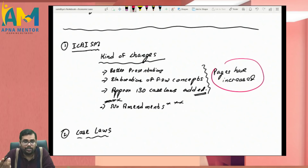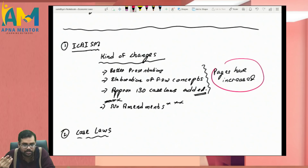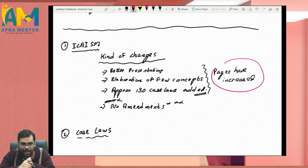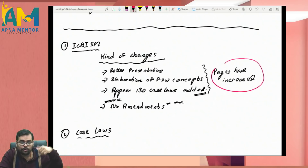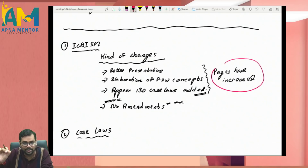Even if you were using the old study material earlier, I advise you to take printouts of the new study material and use it, since this is an open book examination and it's always better to have updated content. One of the most important things for the elective paper is the master index. I have provided a very comprehensive master index for exams, which you can download from www.apnamaster.com in the free resources section.